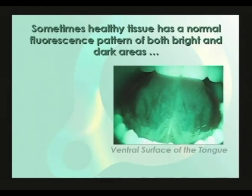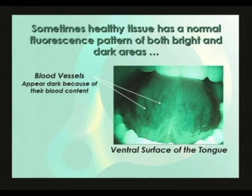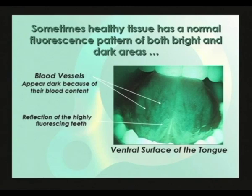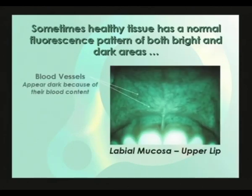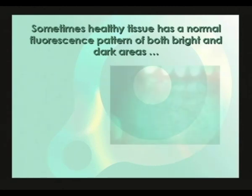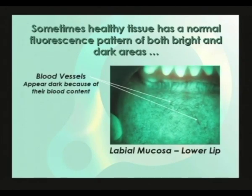Here we see the blood vessels on the ventral surface of the tongue, which appear as dark lines under Velscope, again due to blood absorption. On the lower portion of the tongue, notice the white reflections from the highly fluorescing teeth — watch out for this, as in some situations it may be confusing. This is an image of the labial mucosa on the upper lip, the blood vessels again showing up dark under Velscope. The labial mucosa on the lower lip presents similarly to the upper lip.